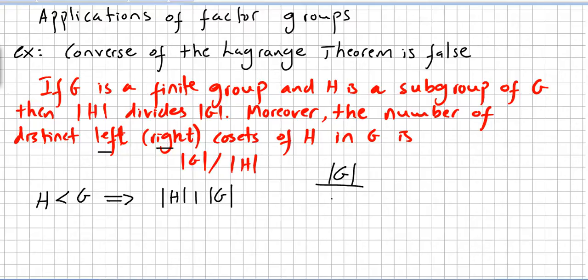So it will be this number, the index, what we call the index number. This is the index number. It will give you the number of left and right cosets of H.